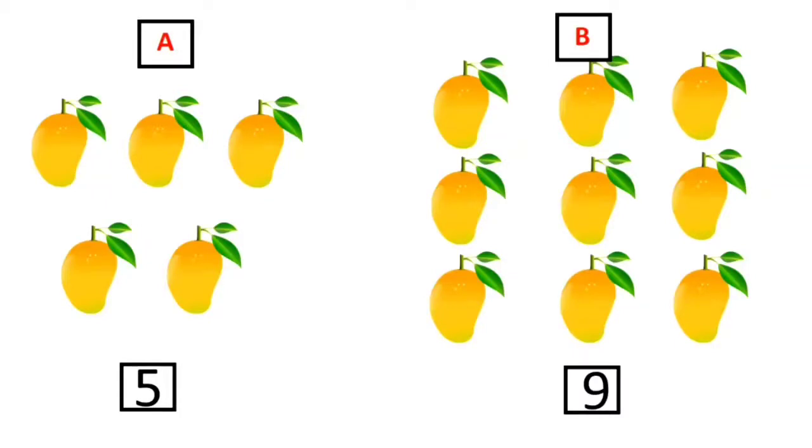If there are two numbers the number which comes later that number is a greater number. So when we start counting numbers from 1 to 10 then which number comes later? 5 or 9?